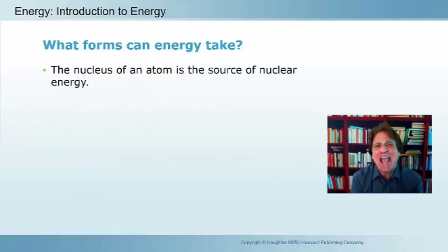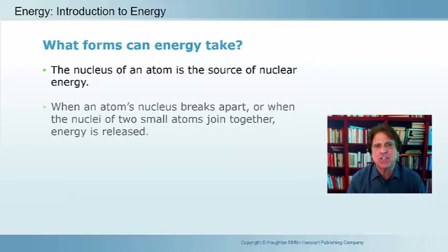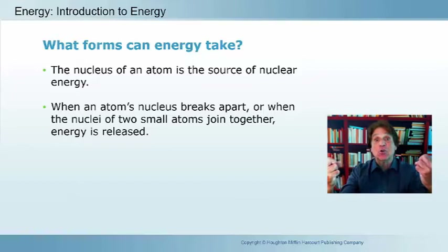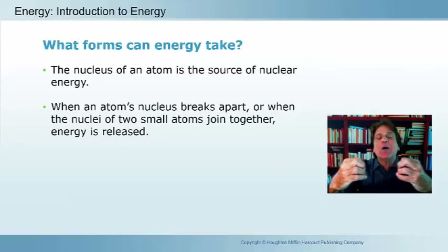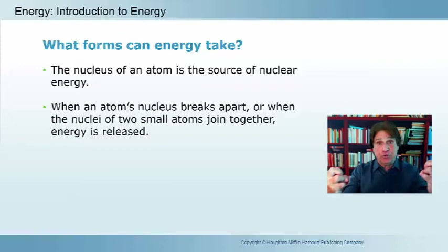The nucleus of an atom also has energy — this is nuclear energy. Nuclear energy can be envisioned when atoms fuse together, as happens in the sun — atomic fusion produces nuclear energy. We can also get nuclear energy by splitting an atom — nuclear fission. So nuclear energy comes from either fusing nuclei together (fusion) or splitting nuclei apart (fission).